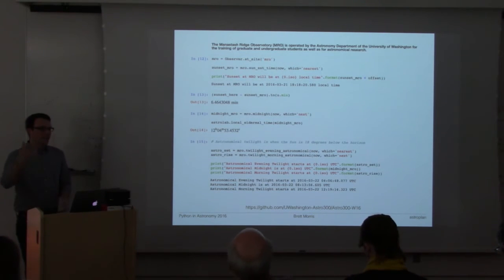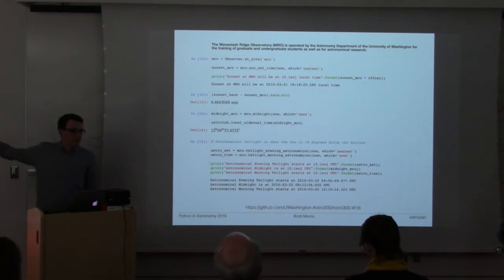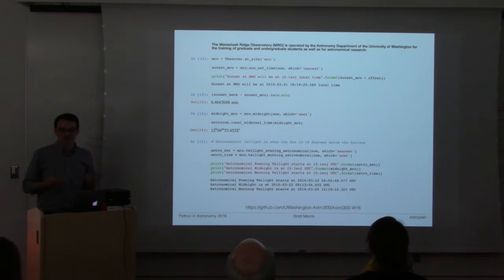He's developed a really nice example that he works through using the Manastash Ridge Observatory which is out in Eastern Washington that our undergraduates take an observing class to learn how to use and they go out there over the summer by themselves and try not to die on the dirt roads. Toby here works through an example for planning observations at MRO which I think is really fun.